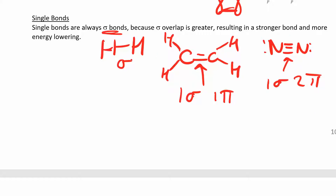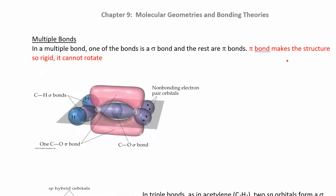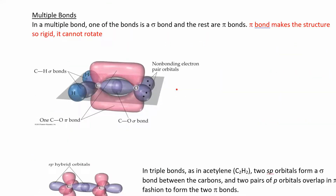A single bond is longer and weaker. A double bond is shorter and stronger. A triple bond is even shorter and stronger. In the diagram, the purple orbitals are hybridized orbitals — that head-to-head overlap is the sigma bond. The pink orbitals are the non-hybridized p orbitals, and their side-to-side overlap is the pi bond.